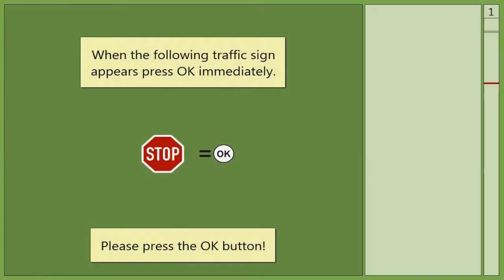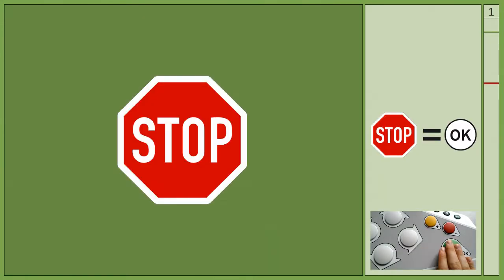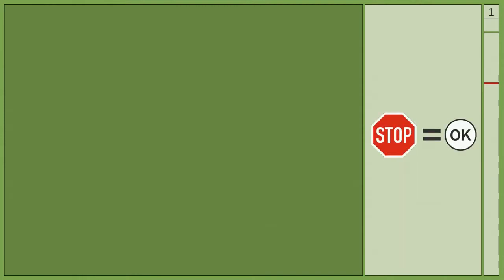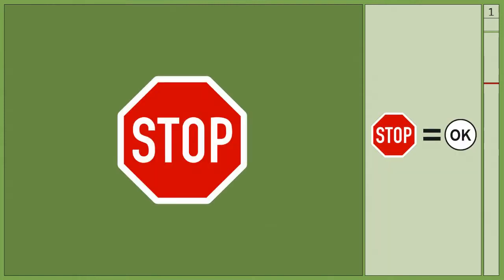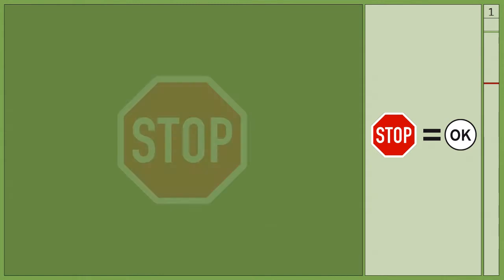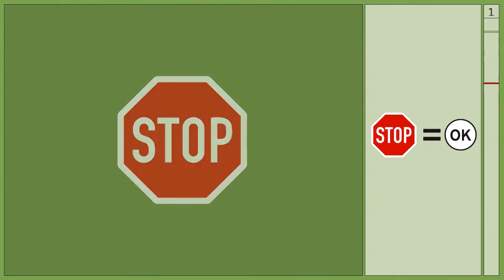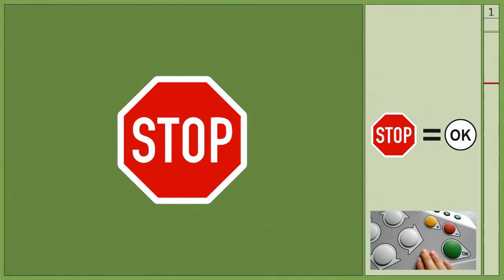The task in this module is to react to visual stimuli as quickly as possible. A reference object and its instruction is shown at the side of the screen. The object will then appear on screen at different intervals and the patient must react by pressing the appropriate button as quickly as possible.